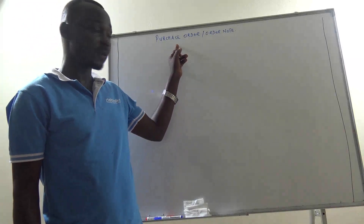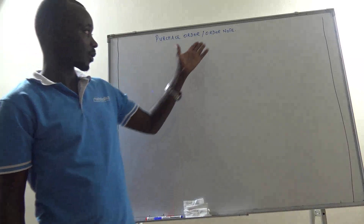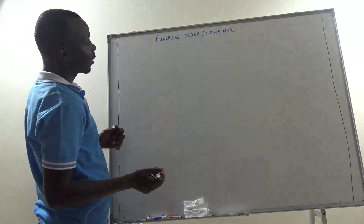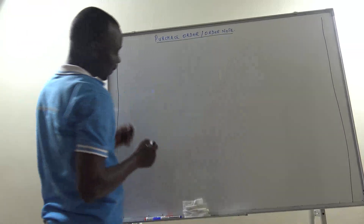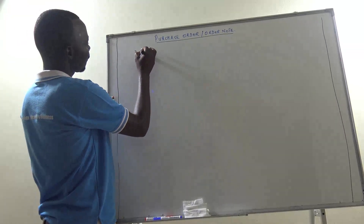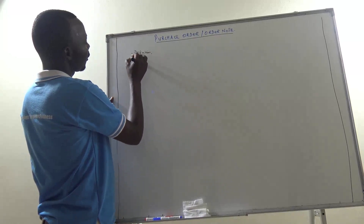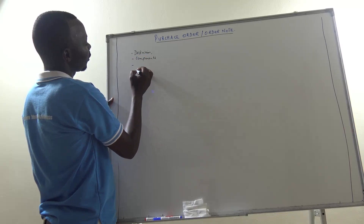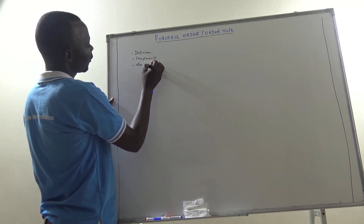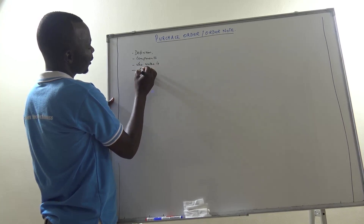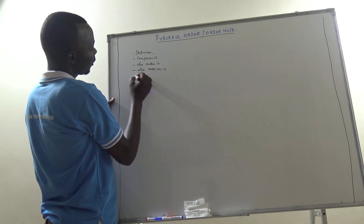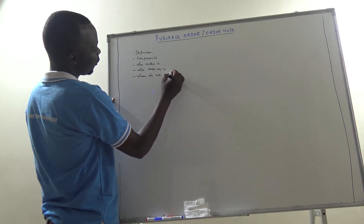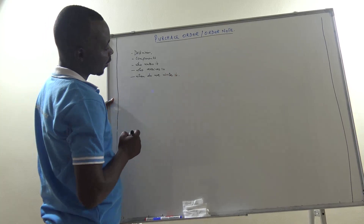We are now going to look at the purchase order — sometimes we call it the order note. In writing, we're going to see its definition, its components, who writes it, who receives it, and when is it written.